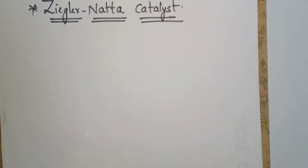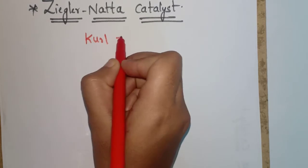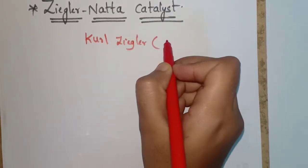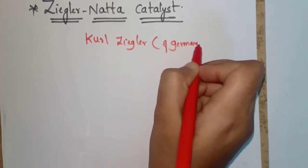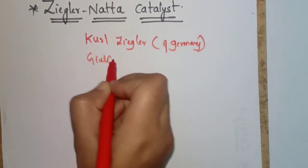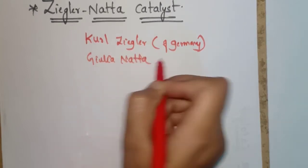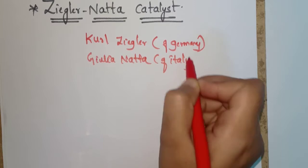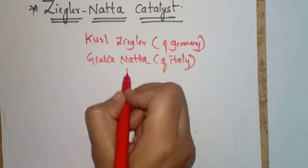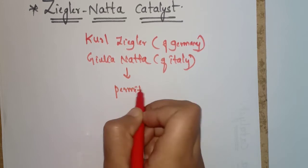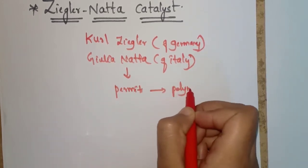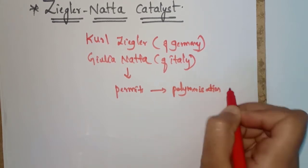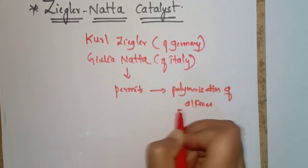In this video we are going to learn about the Ziegler-Natta catalyst. It is very important for B.Sc./M.Sc. students and for people preparing for competitive examinations. Karl Ziegler of Germany and Giulio Natta of Italy developed this catalyst, which permits polymerization of alkenes.